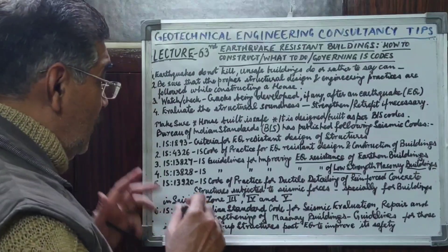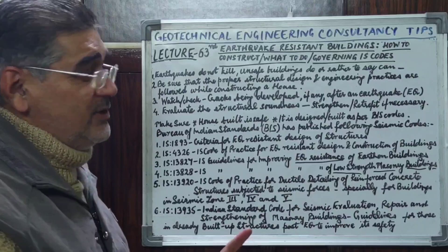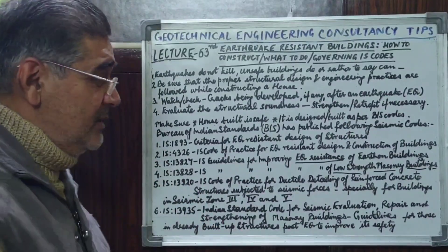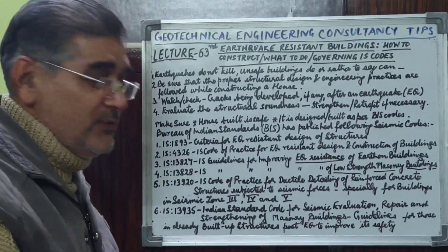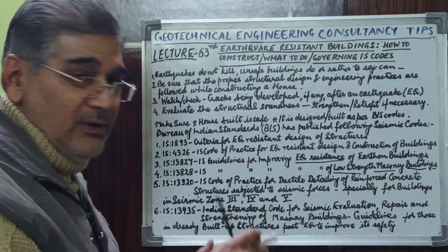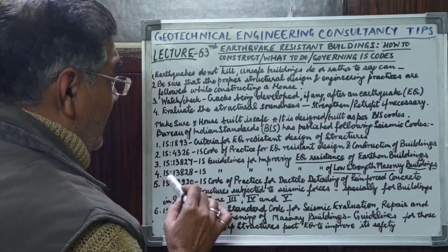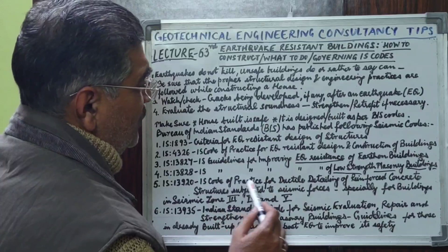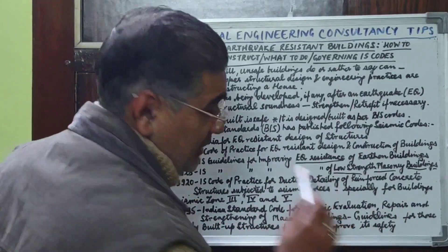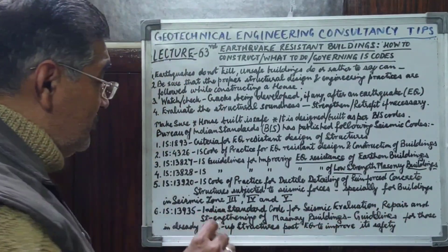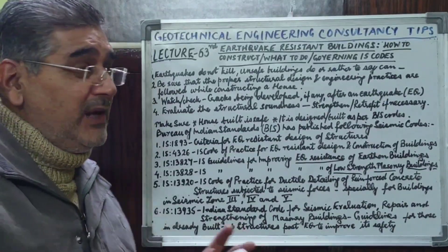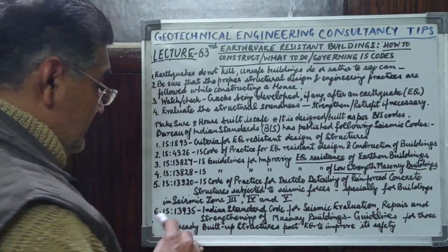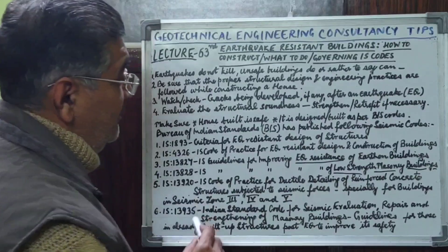Small structures are commonly made as masonry buildings or as RCC framework structures with partition walls. Our Indian Standard codes cover every type of structure and are revised from time to time. You should check that your designer is following the latest codes. IS 13920, which I have already discussed in my previous lecture, is the Indian Standard code of practice for ductile detailing of reinforced concrete structures subjected to seismic forces, and is especially meant for buildings in seismic zones 3, 4, and 5.